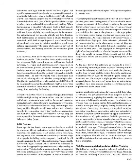Use collective pitch control to manage rotor RPM. If rotor RPM builds too high during an autorotation, raise the collective sufficiently to decrease RPM back to the normal operating range, then reduce the collective to maintain proper rotor RPM. If the collective increase is held too long, the rotor RPM may decay rapidly. The pilot would then have to lower the collective to regain rotor RPM. If RPM begins decreasing, the pilot must again lower the collective. Always keep rotor RPM within the established recommended range for the helicopter being flown.